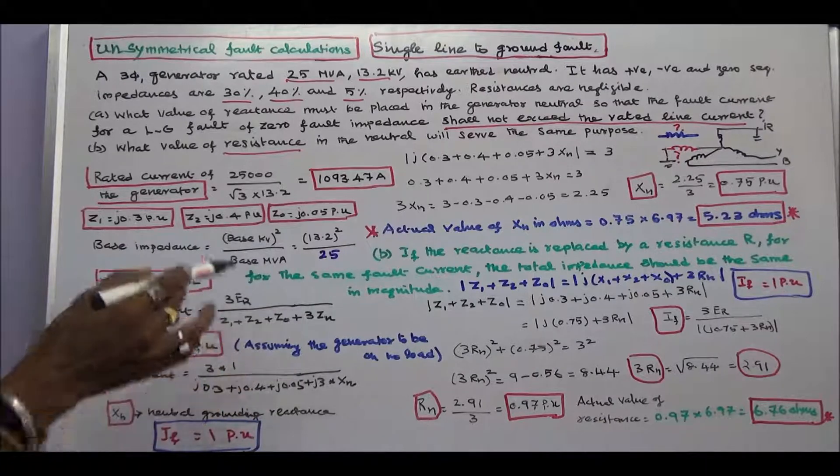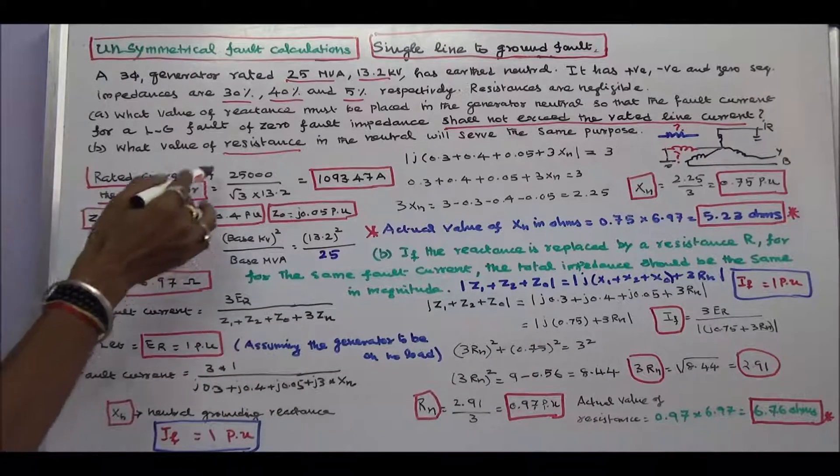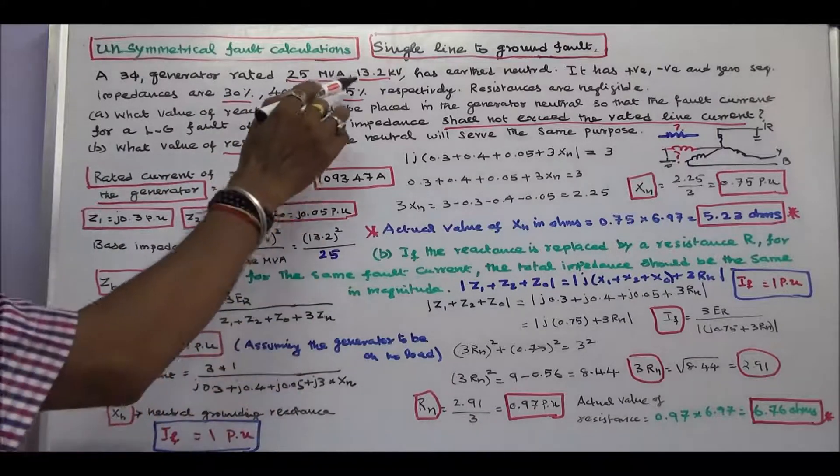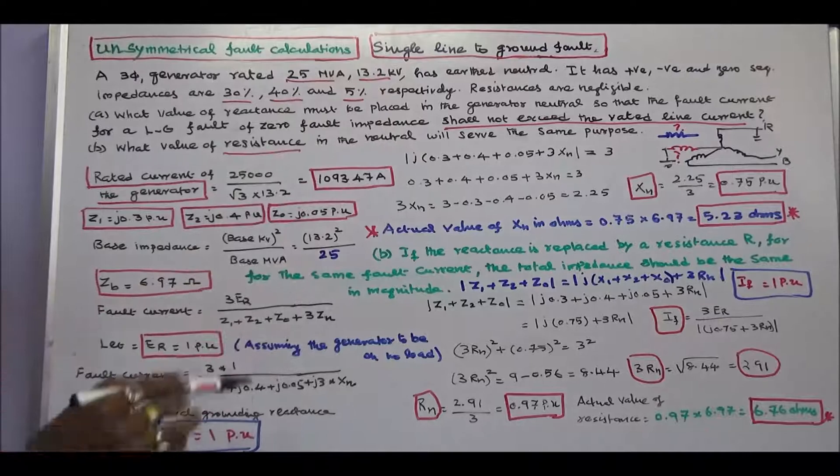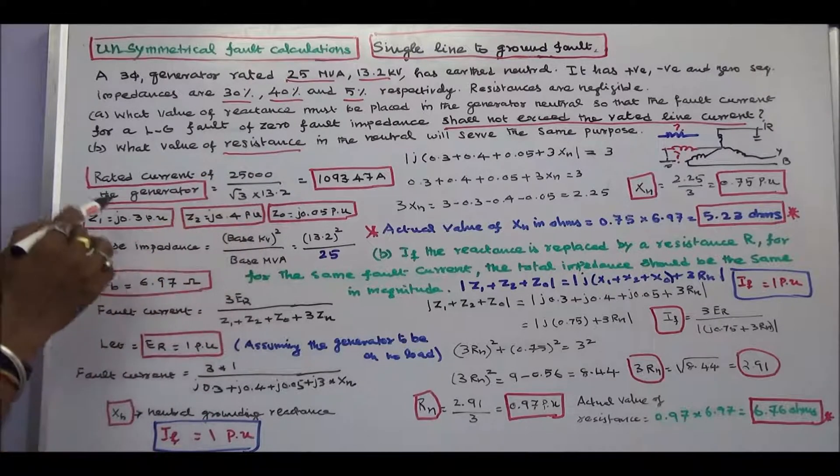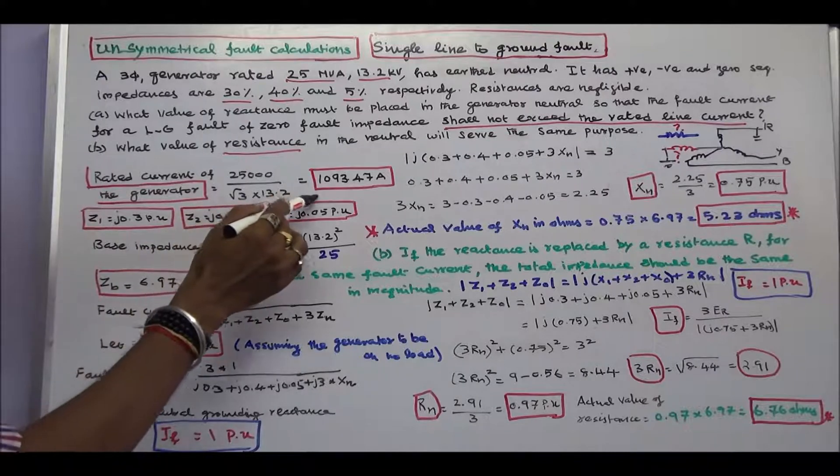First step, we have to calculate the rated current of the generator. Rating of the generator is 25 MVA, voltage is 13.2 KV. 25,000 divided by root 3 into 13.2. Rated current of the generator is 1093.47 amperes.